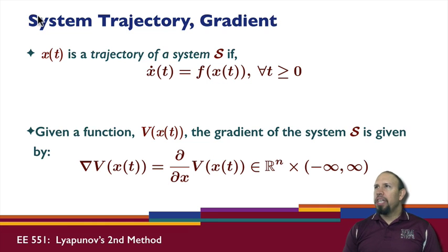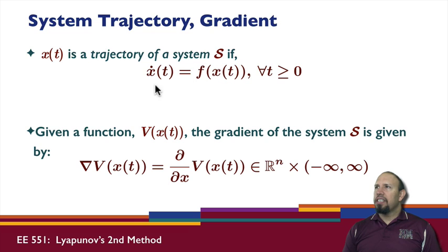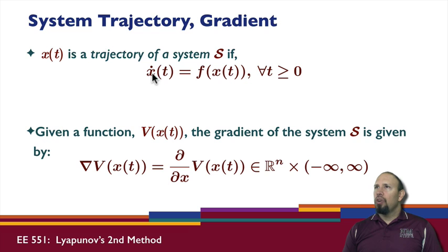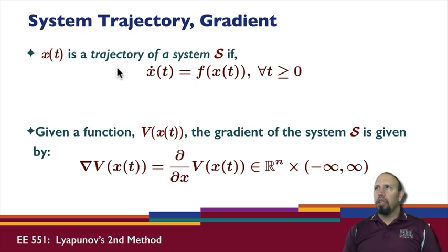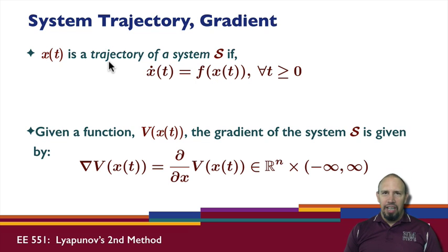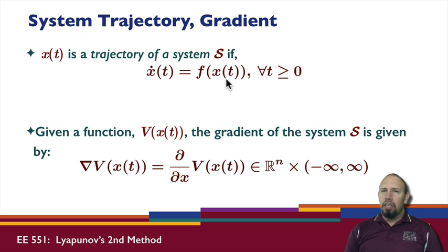One of the things we need to define is what's called the trajectory of a system. So S is the system, and x is the trajectory of the system if it satisfies the state model equation. Whenever we talk about the trajectory of the system, we're assuming the state model for the system.